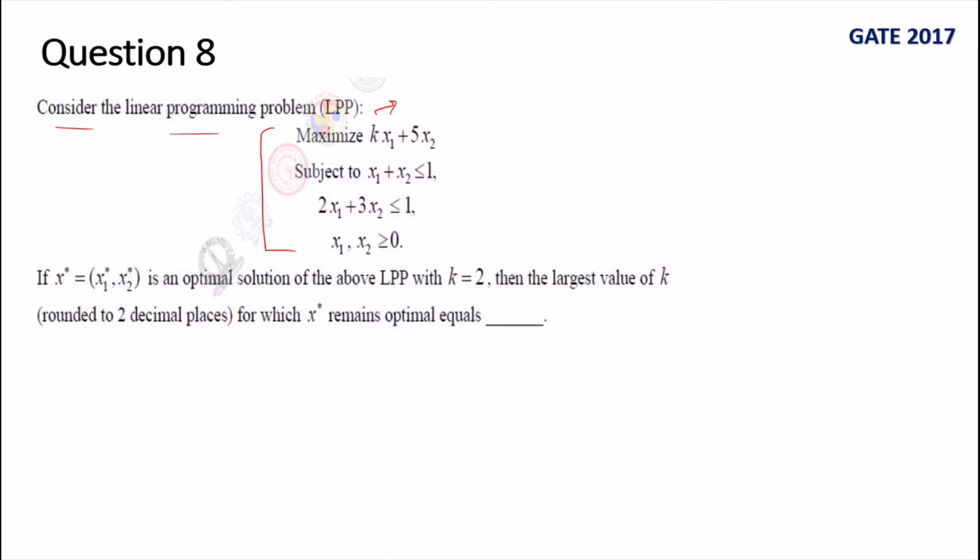This gives us a hint that the question is about the parameter. Two constraints are given and the non-negativity restrictions are also given to us. If x* = (x1*, x2*) is an optimal solution of the above LPP with k equals 2, then the largest value of k for which this point remains optimal equals blank.